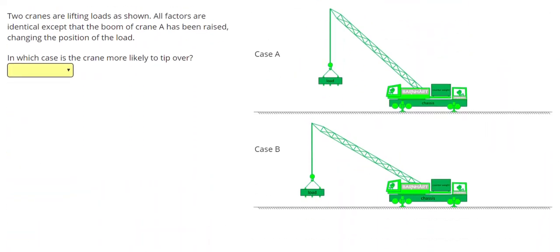Our next problem, we have two cranes again, and they're lifting loads as shown. All factors are identical except that the boom of crane A has been raised changing the position of the load. This is the boom right here. We can see that in crane A, the boom is at a steeper angle than for crane B.